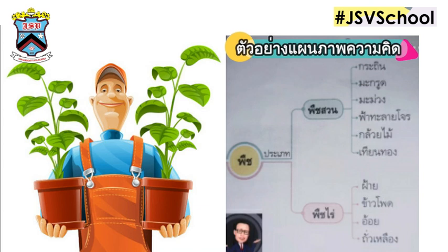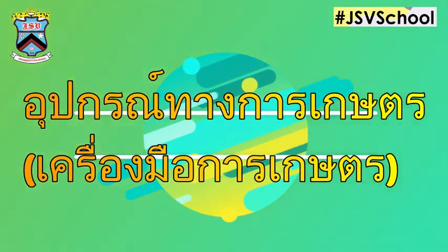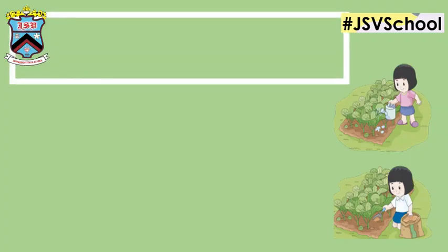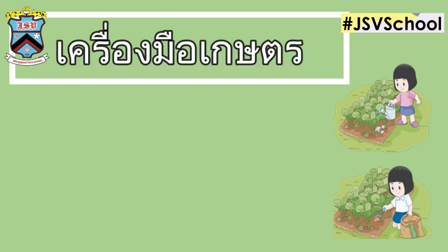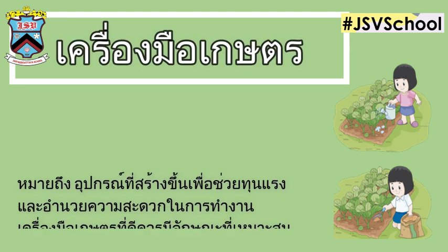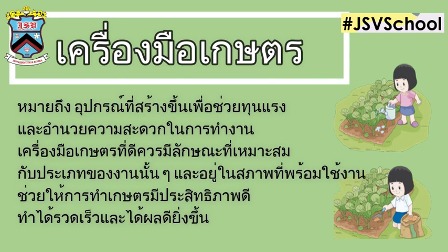เรามีตัวอย่างผ่านภาพความคิด ประเภทของพืชสวน และพืชไร่ ให้นักเรียนดูนะครับ อุปกรณ์ทางการเกษตร เครื่องมือเกษตร หมายถึง อุปกรณ์ที่สร้างขึ้นเพื่อช่วยทุ่นแรง และอำนวยความสะดวกในการทำงาน เครื่องมือเกษตรที่ดีควรมีลักษณะเหมาะสมกับประเภทของงานนั้นๆ และอยู่ในสภาพที่พร้อมใช้งาน ช่วยให้การทำเกษตรมีประสิทธิภาพดี ทำได้รวดเร็ว และได้ผลดียิ่งขึ้น